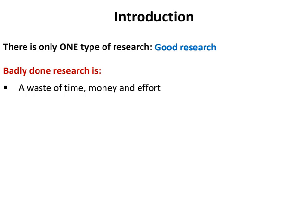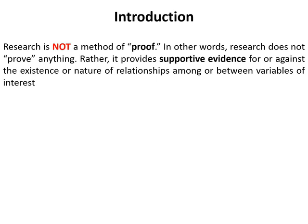Badly done research is just a waste of time, money, and effort, and at the same time it is unethical because you will expose individuals to a risk of experimentation without any benefit. It is also important to know that research is not a method of proof. In other words, research does not prove anything, but it provides supportive evidence for or against the existing nature of relationships among or between the variables of interest. Because information and knowledge is a cumulative process, we need multiple researches in order to reach a method of proof.